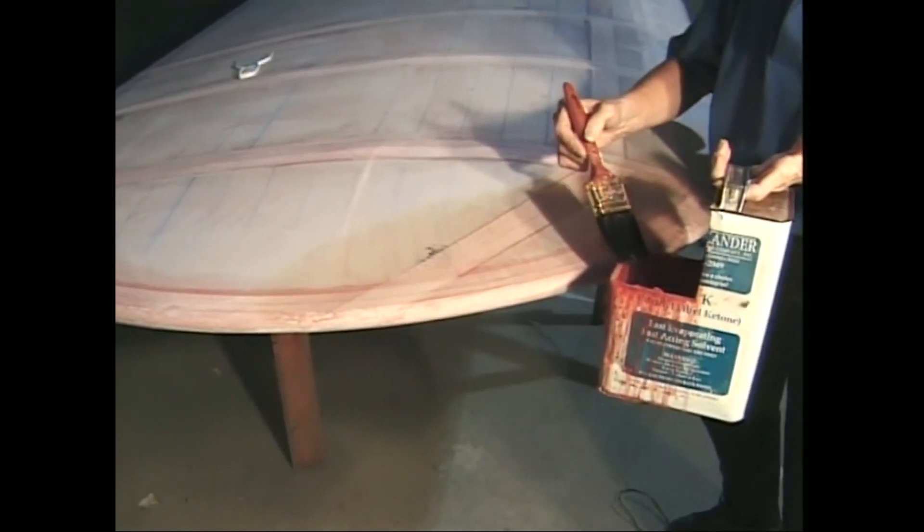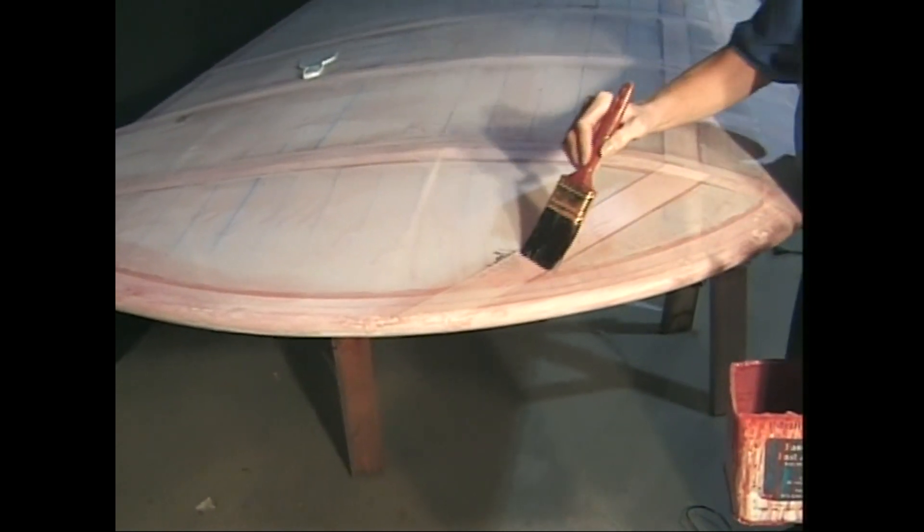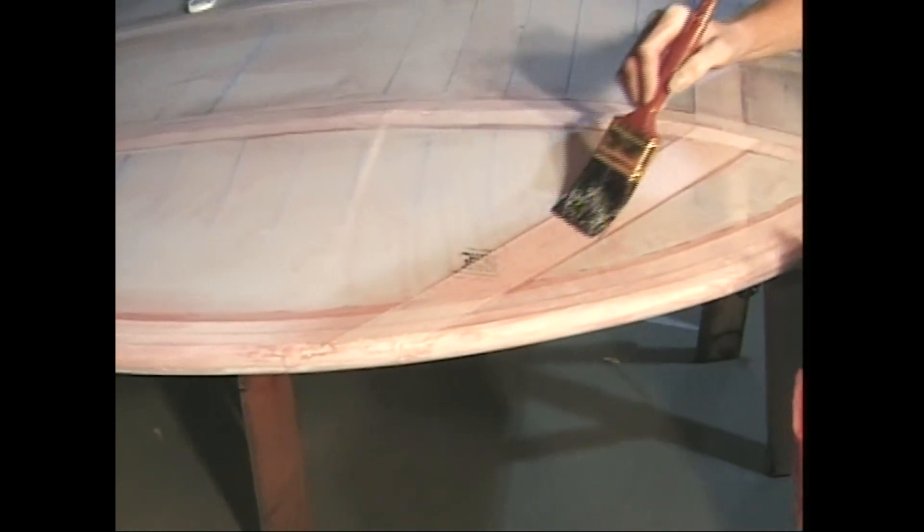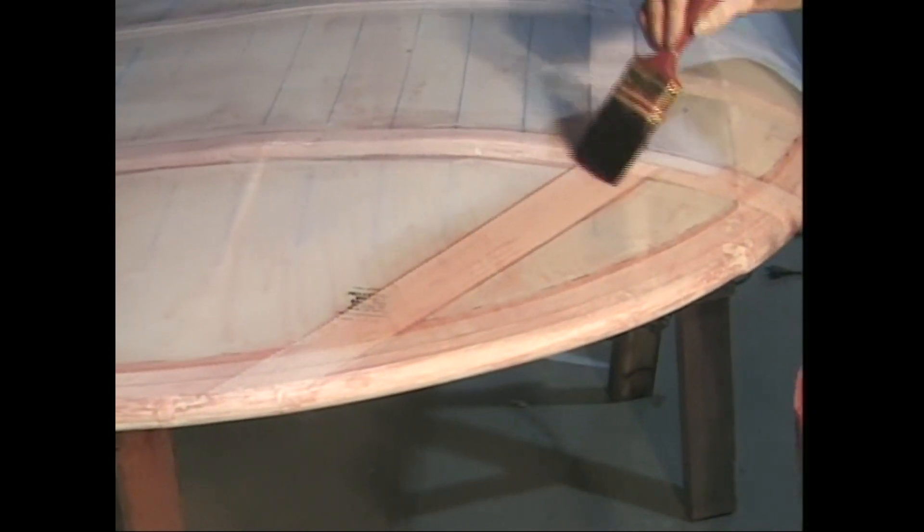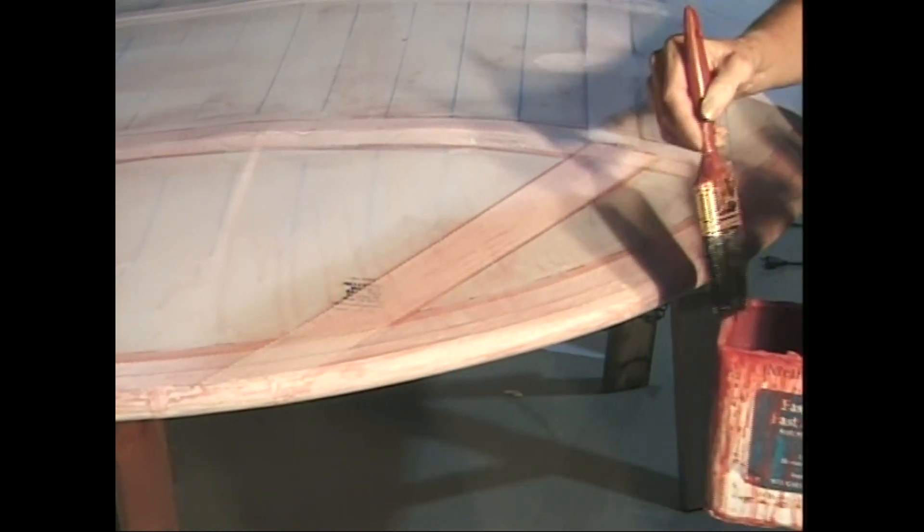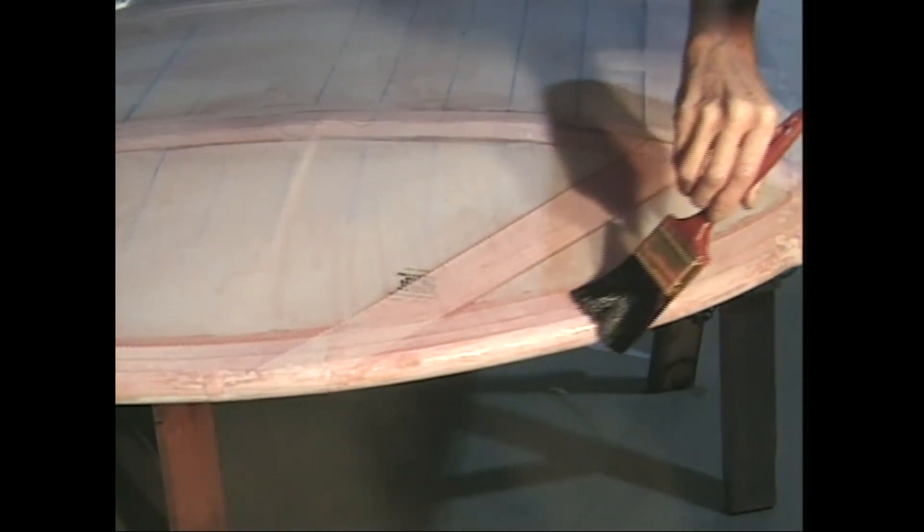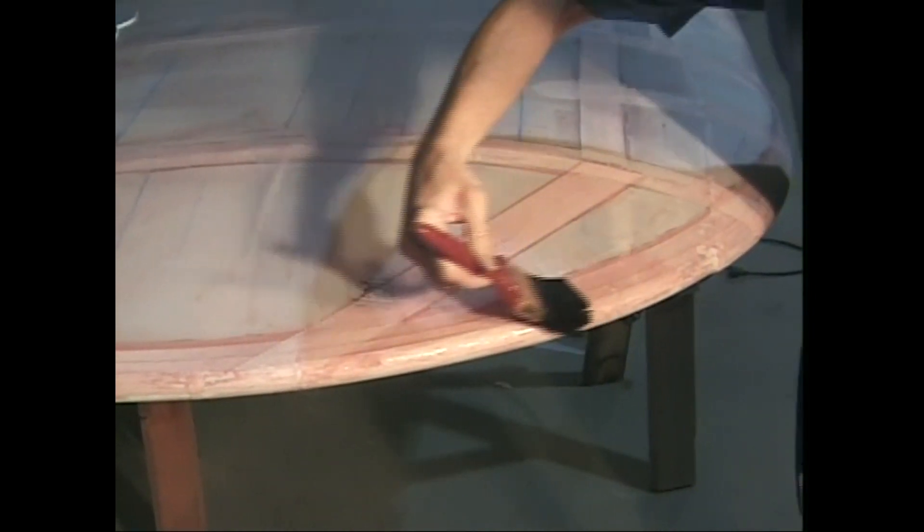After all the tapes have been applied and allowed to dry, brush a final coat of polybrush reduced three to one over the top of each tape and gusset. This helps avoid pinholes later. Allow this last coat to dry completely, then move on to the next step, heat smoothing.